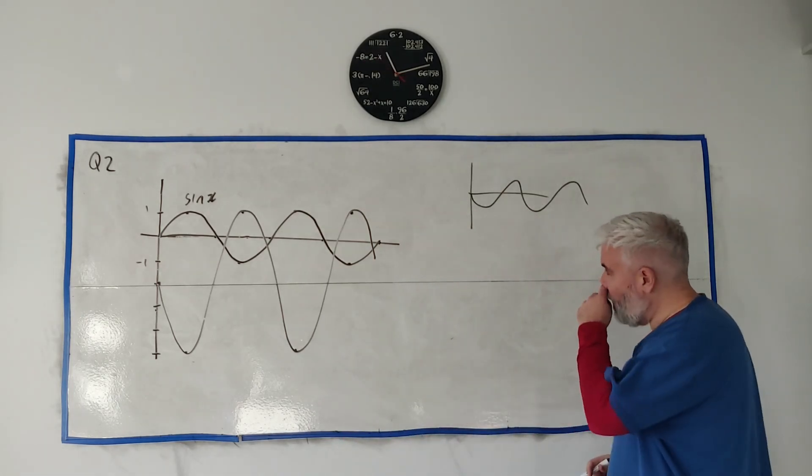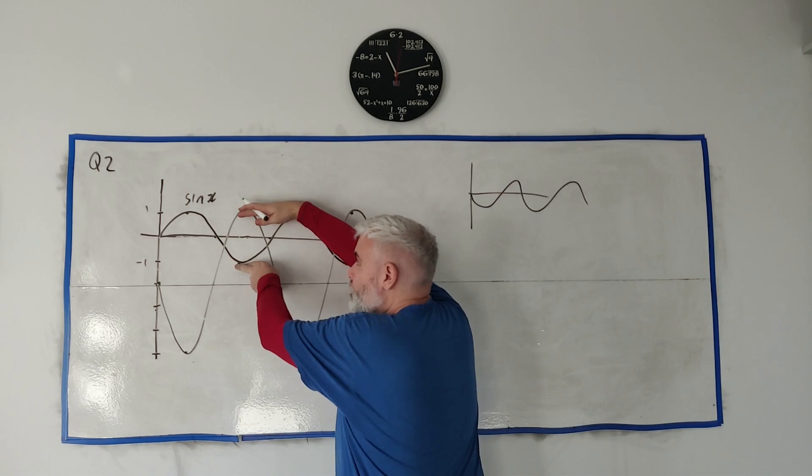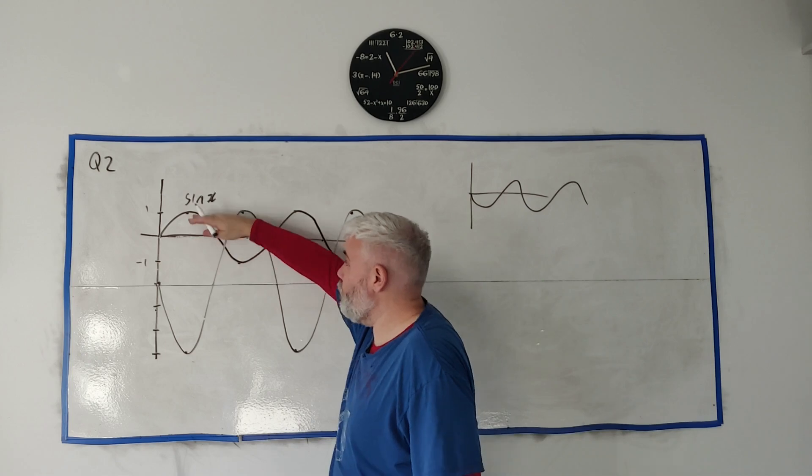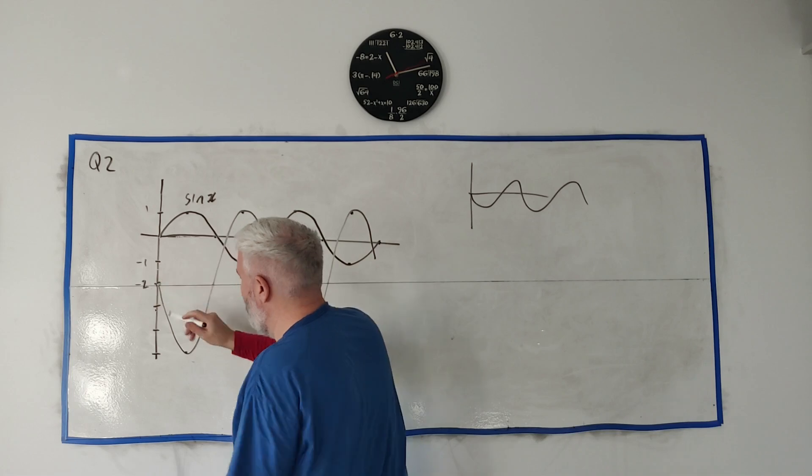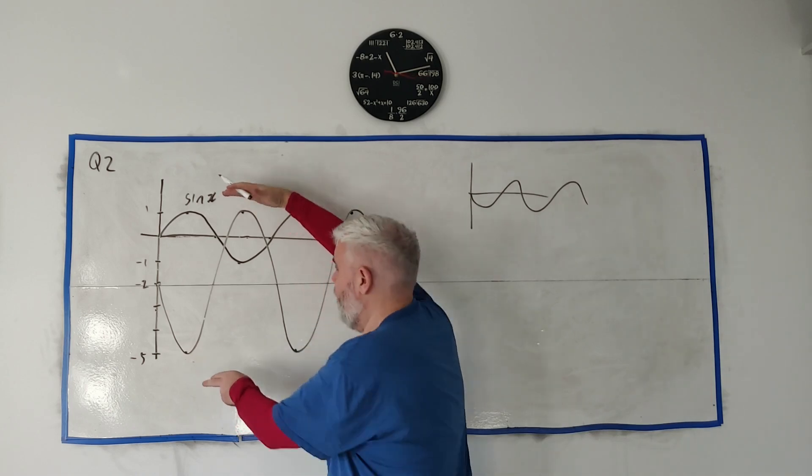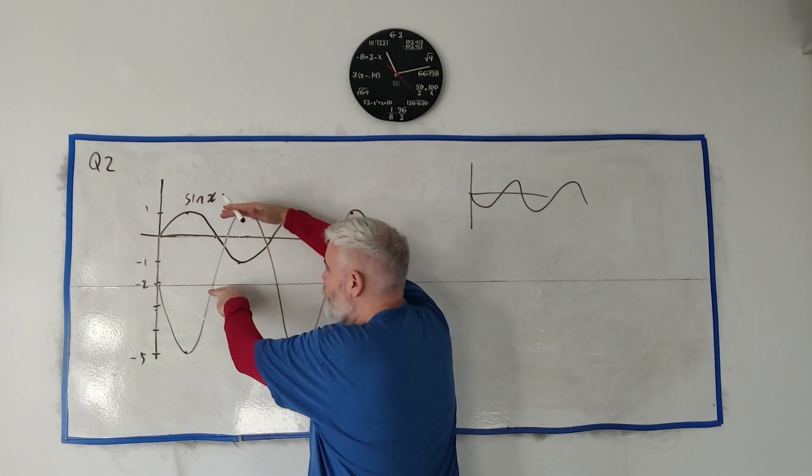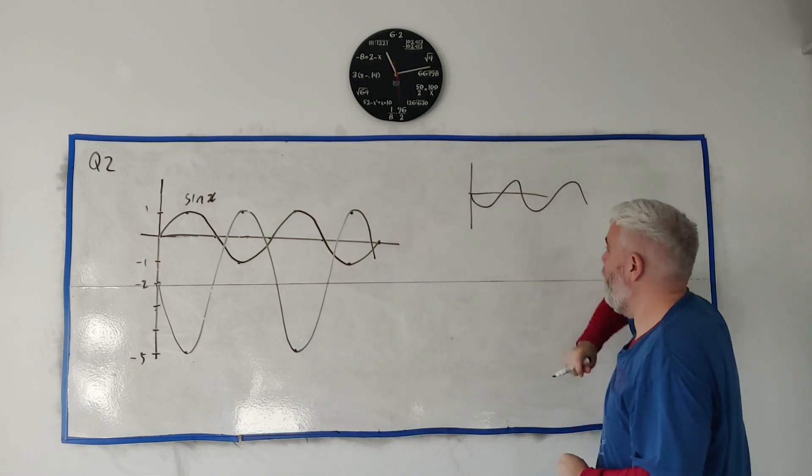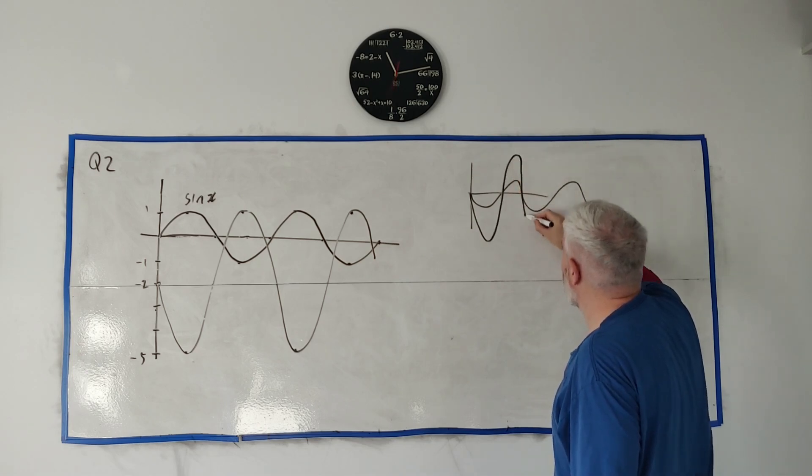A sine function goes from one to minus one, a gap of two, or from the center it goes up one. This other function from its center starts at minus two and goes down to minus five, or you can think of it as going from one to minus five. So it either goes a total of six, or I think of half of it as being three. So a sine function is one high, this function is three high, so I want this new function to be three times higher. So we're going to stretch it out.